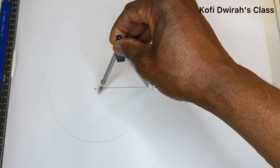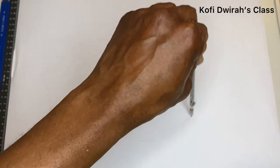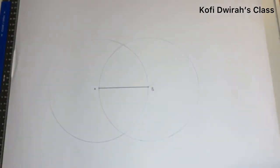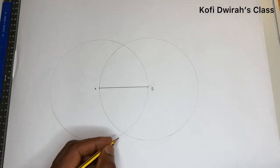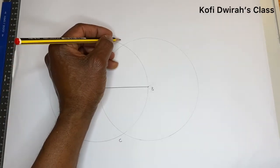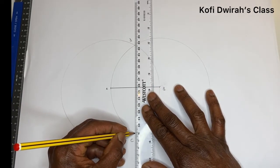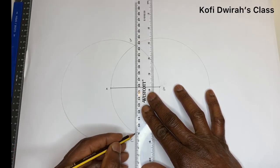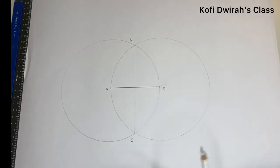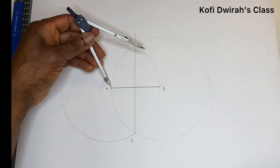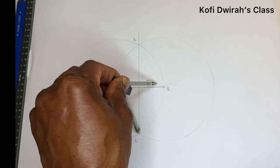Now we have point A and point B. Then we have this point to be point C, and let's consider here to be point D. Then you draw a straight line from C through D — it goes like this. Then at point C, with the same radius you used to draw the circle at points A and B, you draw another circle.